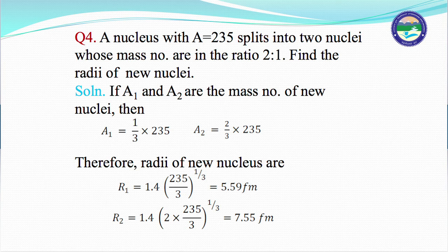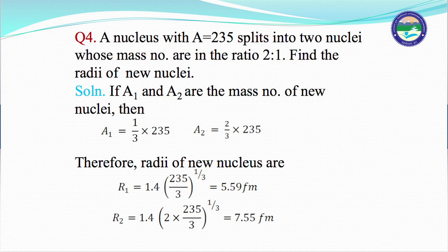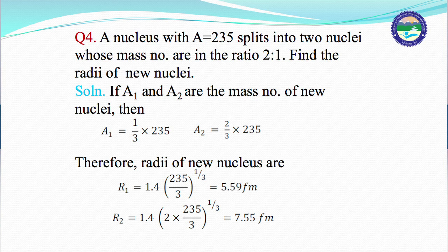Therefore, the radii of the new nuclei: R₁ equals 1.4 times 235 upon 3 raised to power 1 by 3. If you solve this, the value is 5.59 fermi. And R₂, which we calculated, equals 1.4 times 2 into 235 upon 3 raised to power 1 by 3. This comes out to be 7.55 fermi.